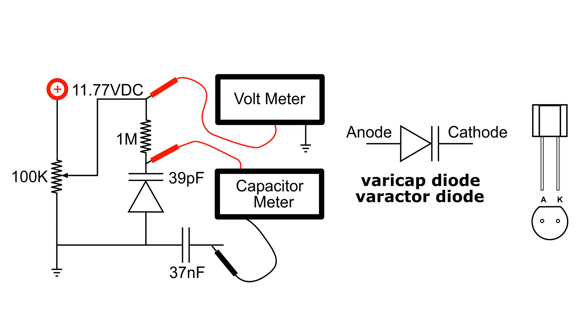The other meter is a capacitor or capacitance meter, and it's going to be connected to the cathode of the varactor and the open end of that 37 nanofarad capacitor.